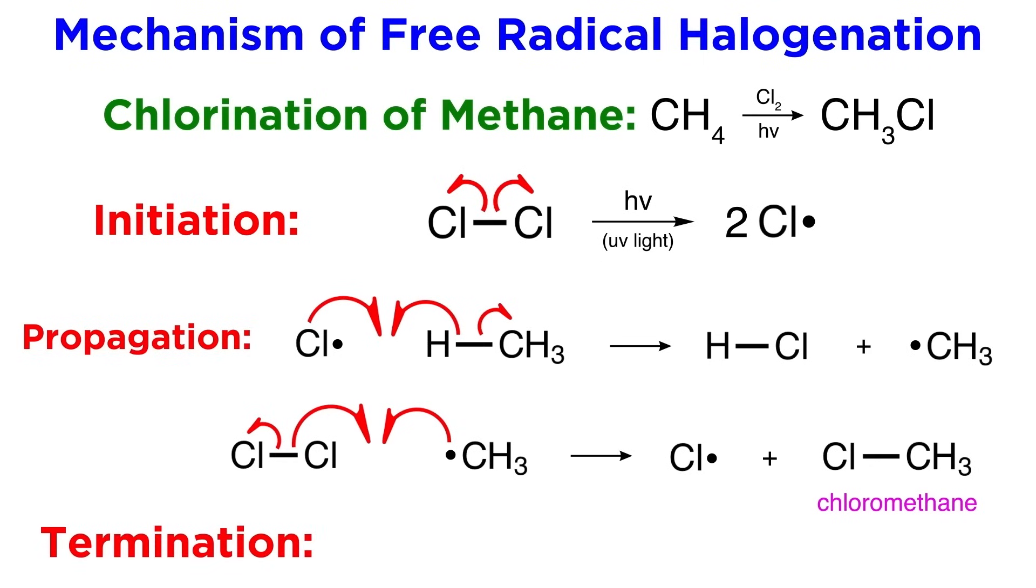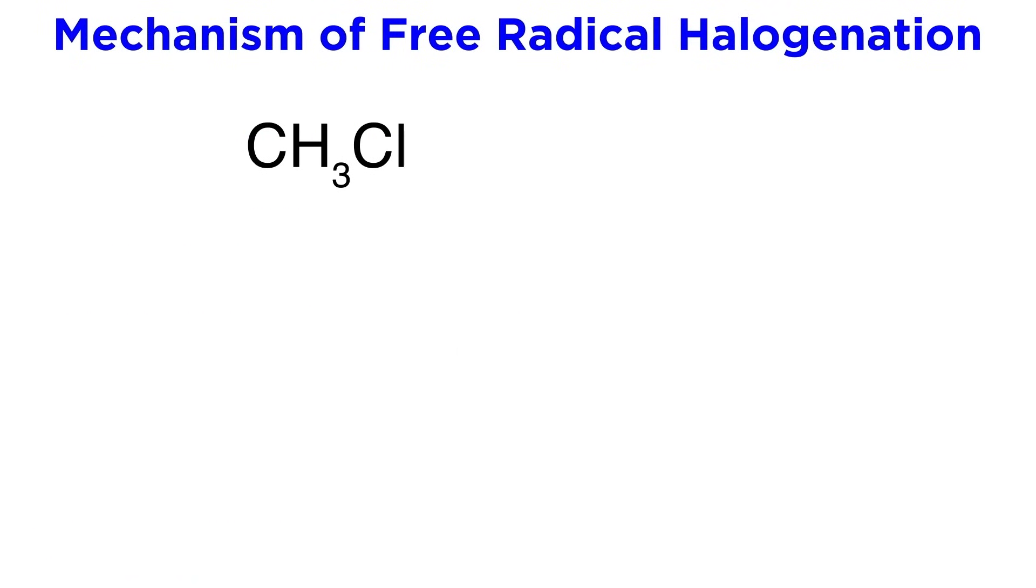Of course termination steps are also possible in solution. Two chlorine radicals could meet and bond, two methyl radicals could meet and bond to form ethane, or a chlorine radical and methyl radical could bond to form the product. However, these are not specifically required for the formation of our product. We should point out that this is unlikely to stop here.